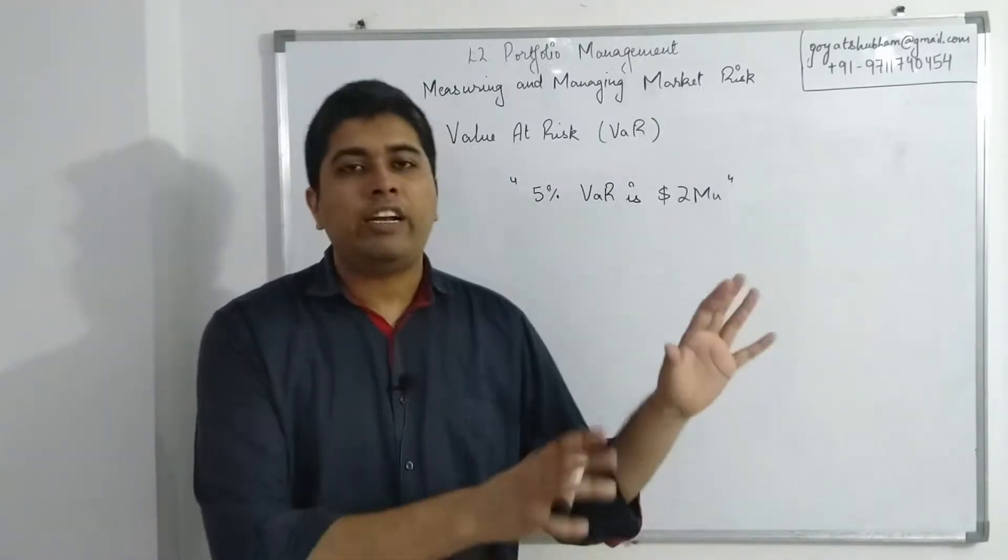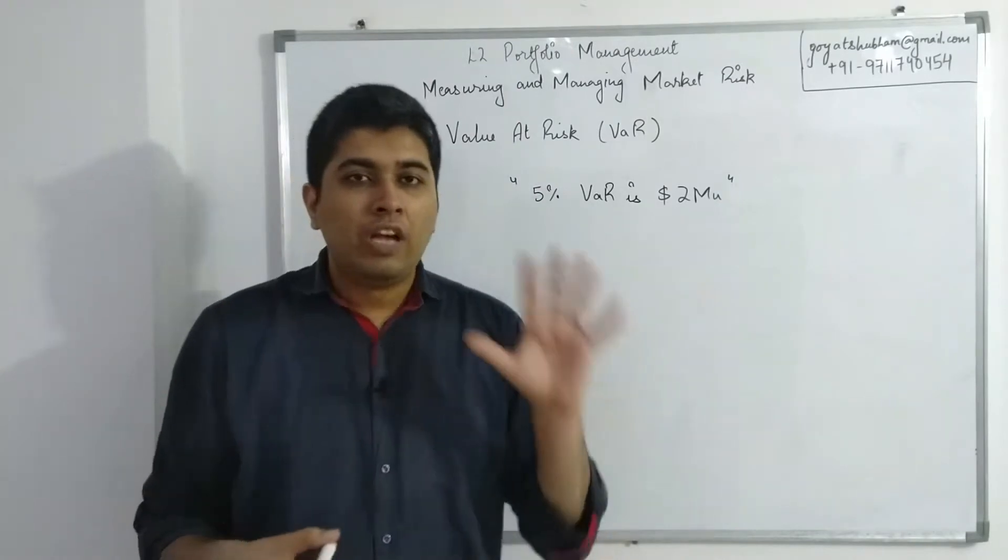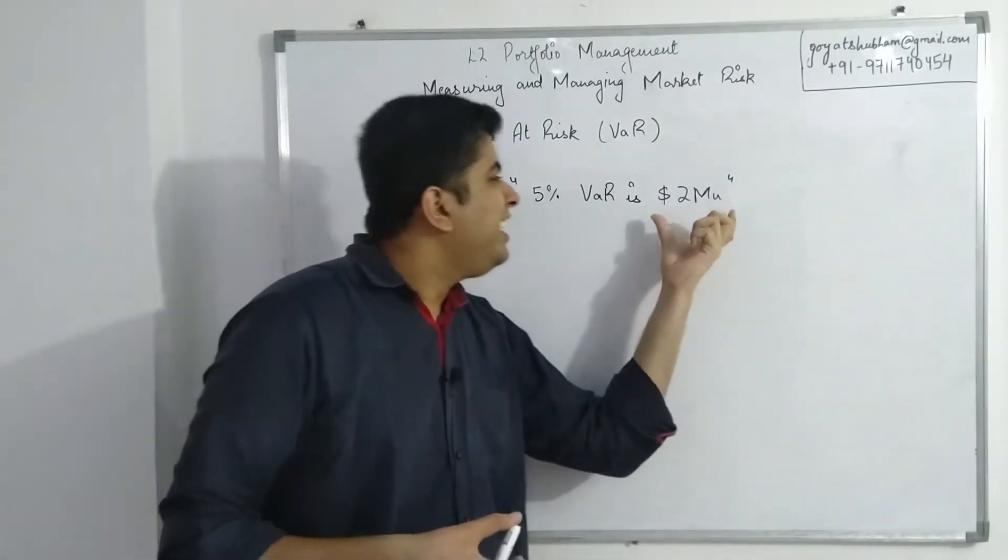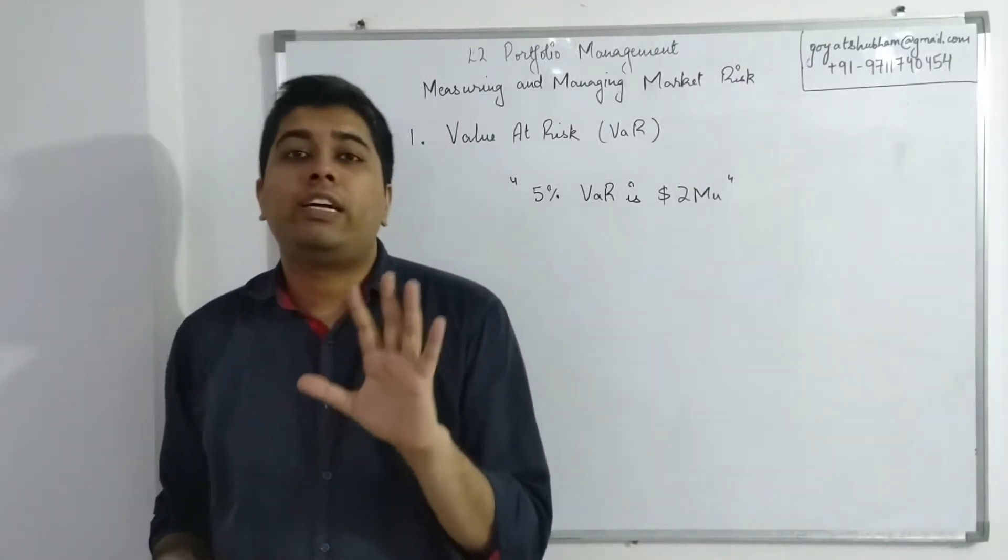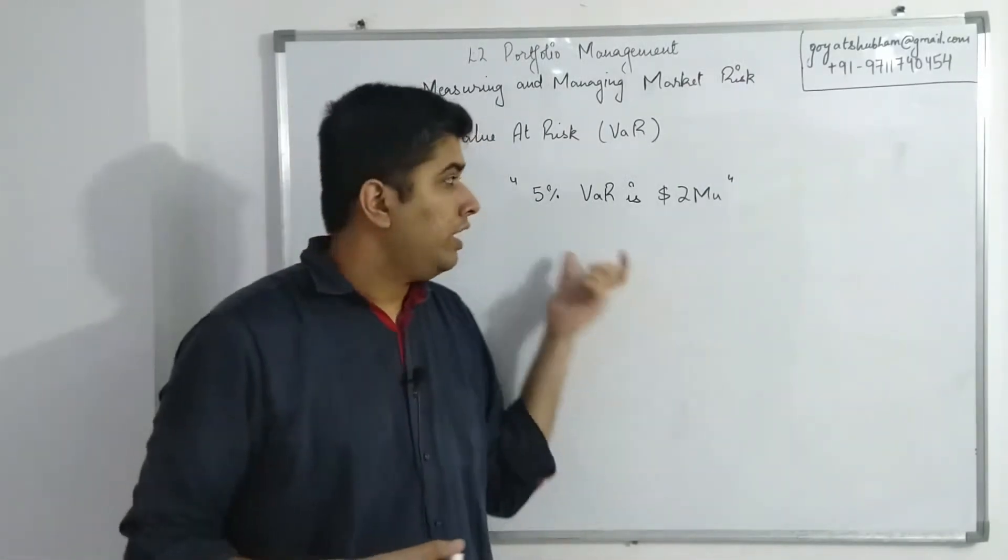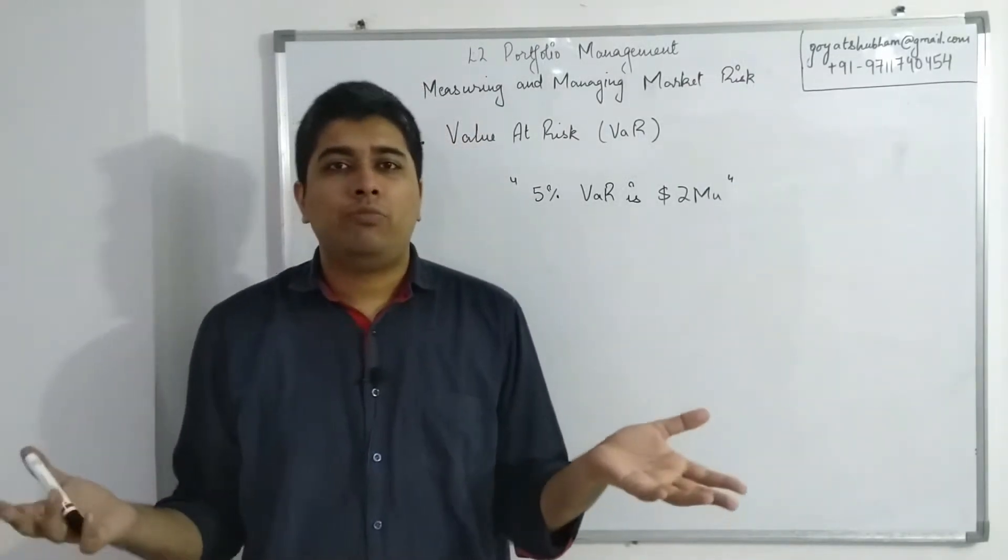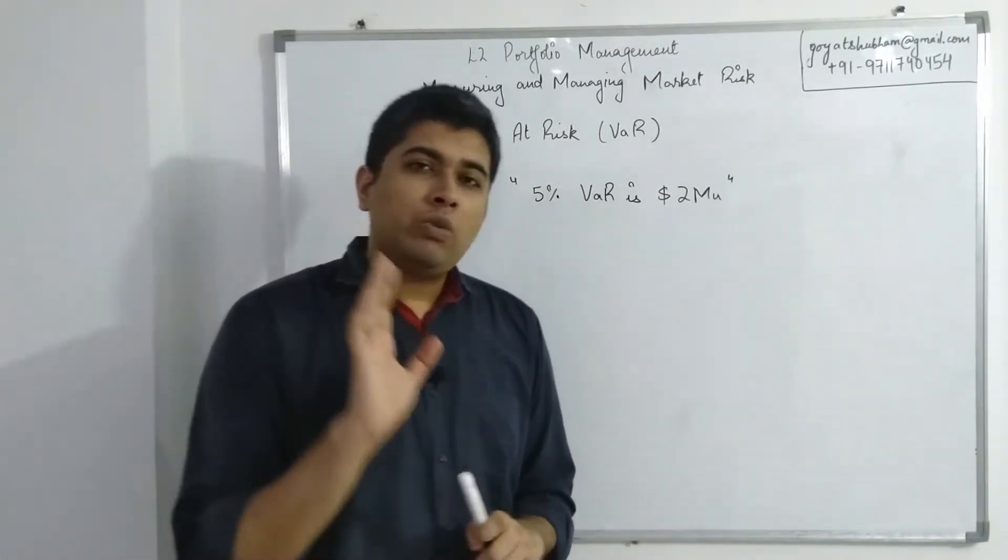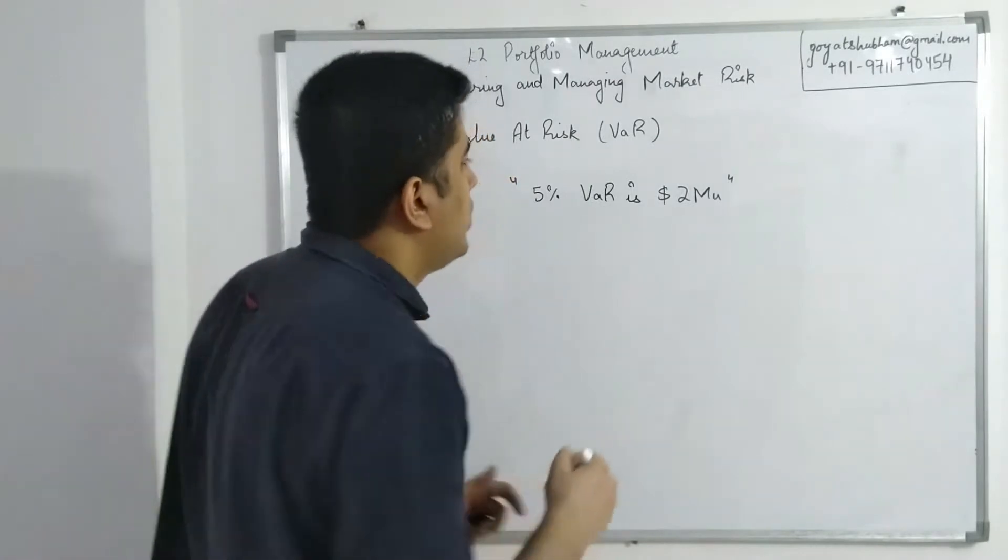But five percent of the time you will have a loss of at least two million. This two million is just 'at least,' which means in this five percent you can even have more than two million. This two million is the threshold. Now, in order to understand this better, let me draw a graph.